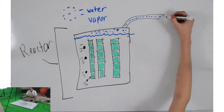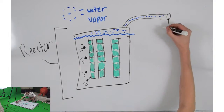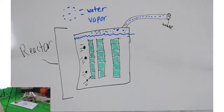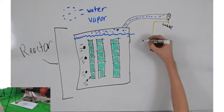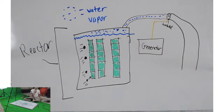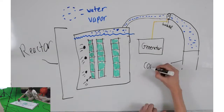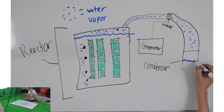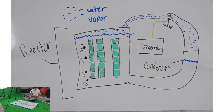When the atoms split, there is an astronomical amount of thermal energy released, which heats the water. When the water boils, it turns into steam, which spins a turbine, which powers the generator, which creates electricity. Afterwards, the steam is cooled, turning it back into water, where it is reinserted back into the reactor to be heated again.